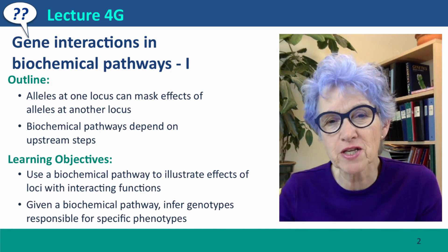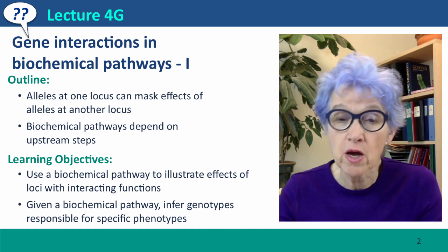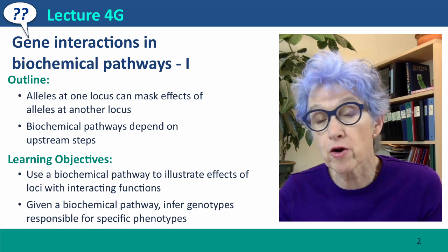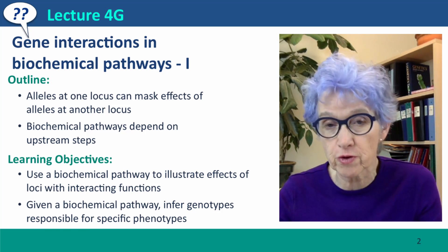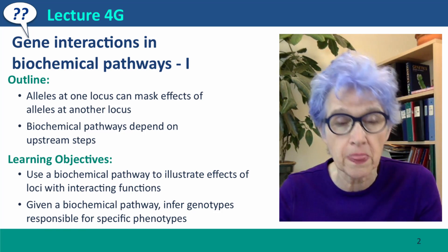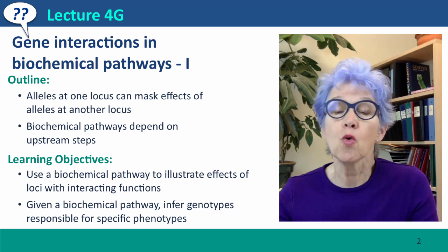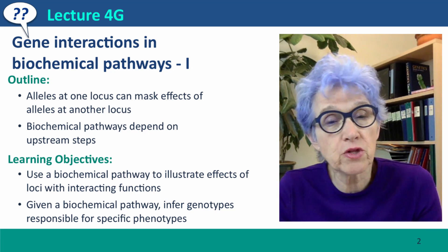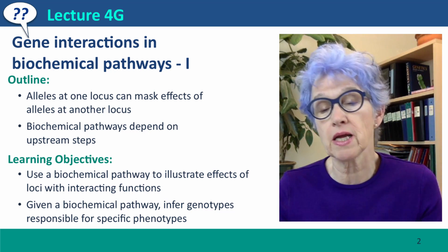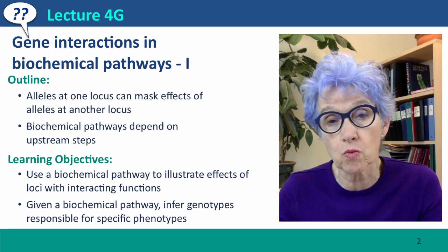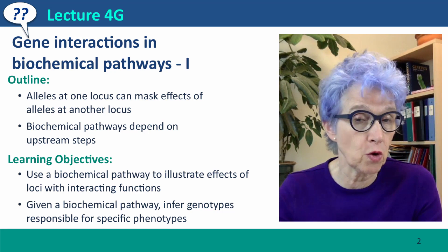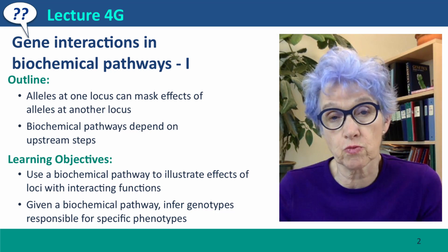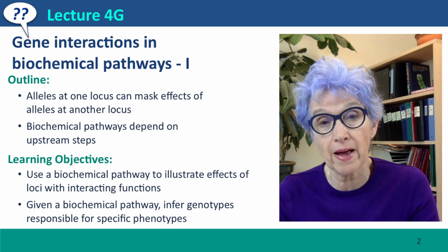Hi, everyone. Welcome back to Useful Genetics. This is Lecture 4G, where we're going to talk about gene interactions. First, we're going to consider a case where genes act independently — they don't interfere with each other's effects on phenotype. And then we're going to consider situations where alleles of different loci interact with each other in their effects, so that sometimes the presence of a particular allele at one locus prevents us from knowing which alleles are present at another locus. In this lecture, we'll start with a simple example of a simple biochemical pathway.